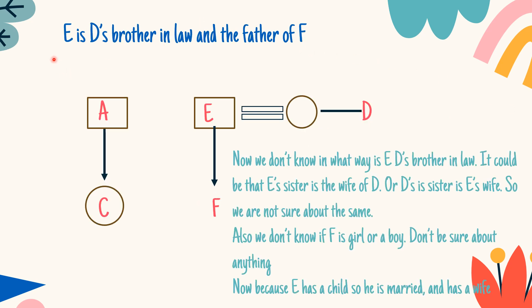E is D's brother-in-law and the father of F. To establish a relation between E and D, there can be two ways of doing it: either E's sister is the wife of D, or D's sister is the wife of E. In both ways, E and D will be brother-in-law to each other. So this situation is ambiguous.